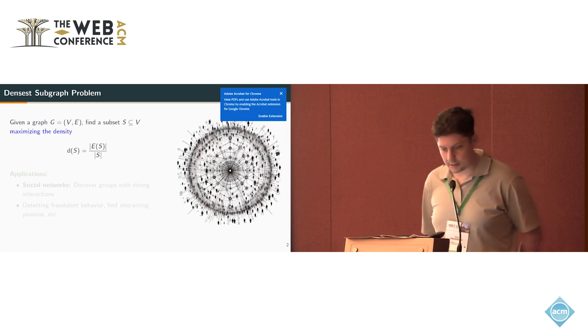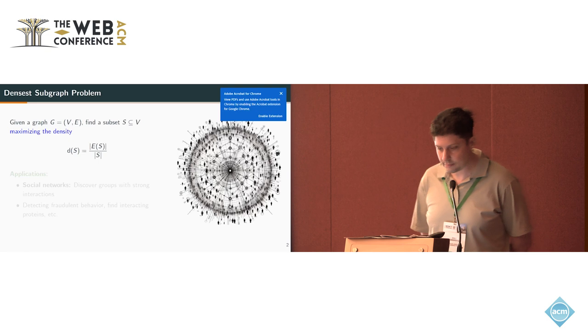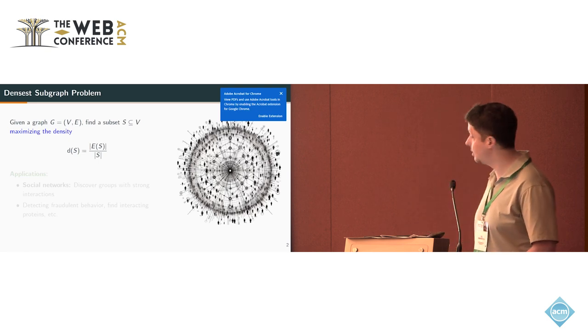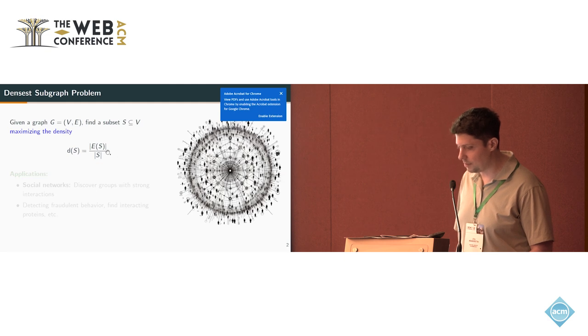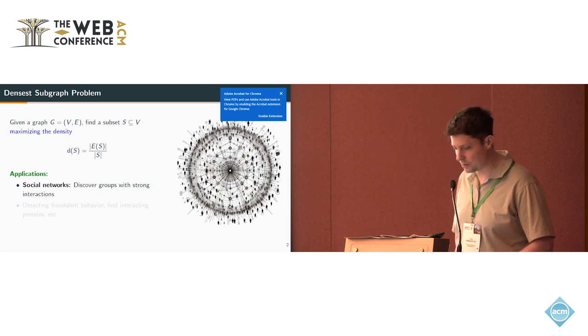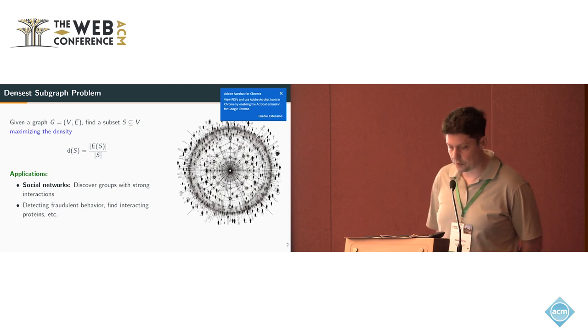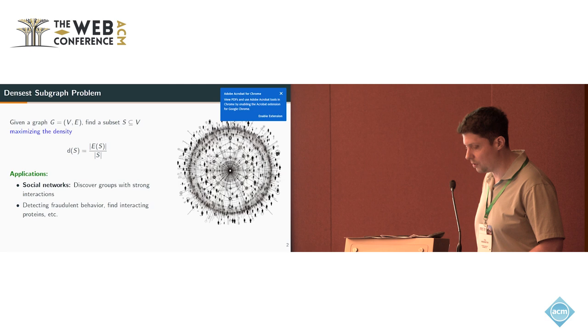One of the classical problems is the densest subgraph problem, where we are given an undirected graph and we want to find a subset S of the nodes such that we maximize this density, where the density is defined as the number of edges in the induced subgraph divided by the size of S. There are many applications for this - for example, in social networks we can use it to discover groups with strong interactions, and it has been used in a lot of other tasks like detecting fraudulent behavior, finding interactive proteins, or also for content recommendation.